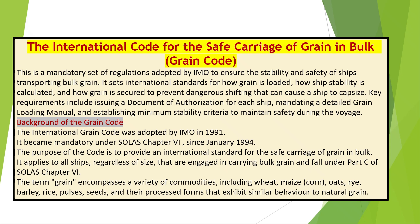The International Code for the Safe Carriage of Grain in Bulk, or Grain Code, is a mandatory set of regulations adopted by IMO to ensure the stability and safety of ships transporting bulk grain. It sets international standards for how grain is loaded, how ship stability is calculated, and how grain is secured to prevent dangerous shifting that can cause a ship to capsize. Key requirements include issuing a document of authorization for each ship, mandating a detailed grain-loading manual, and establishing minimum stability criteria to maintain safety during the voyage.